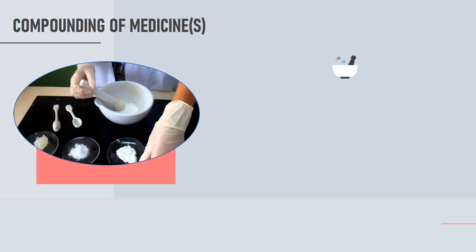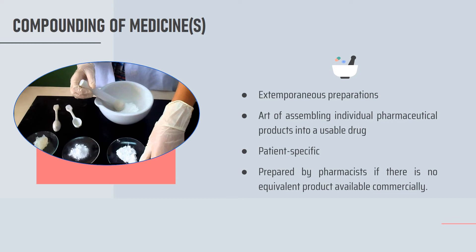Thirdly, compounding of medicines is also one of the essential services in a community pharmacy. It is an extemporaneous preparation which is known as the art of assembling individual pharmaceutical products into a drug. Compounding is often patient-specific and only prepared by pharmacists if there is no equivalent product available commercially. Mortar and pestle are the traditional apparatus used in this process.